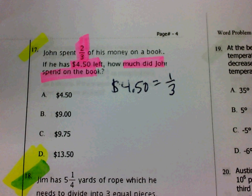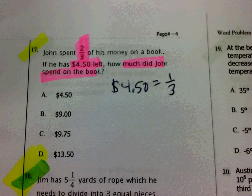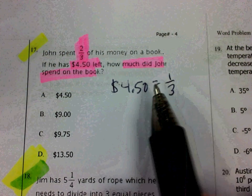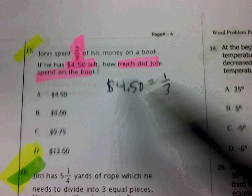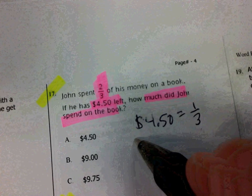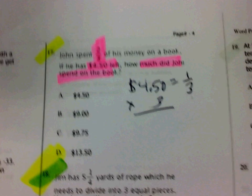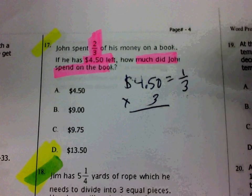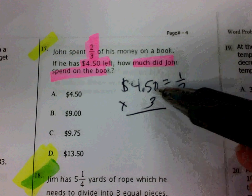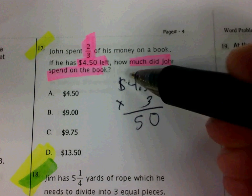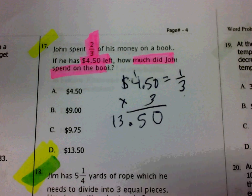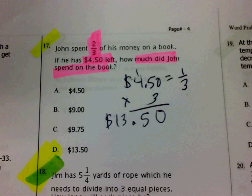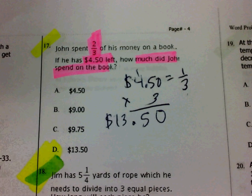So if I work backwards to find out how much money he started with, $4.50 is one-third of the amount. So if I take $4.50 and multiply it by three, I should be able to find out how much money he started with. If I go through and do my multiplication, it looks like John started with $13.50.